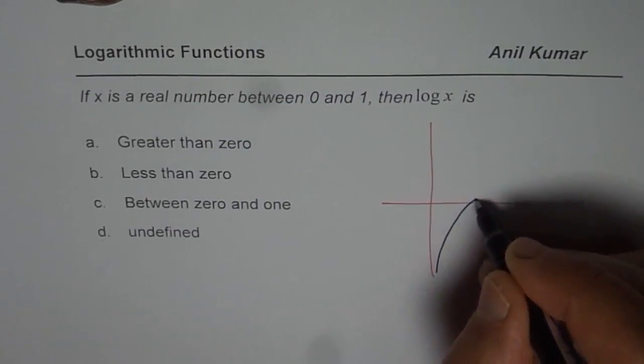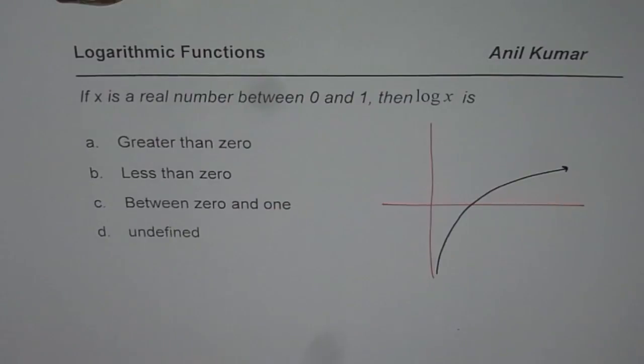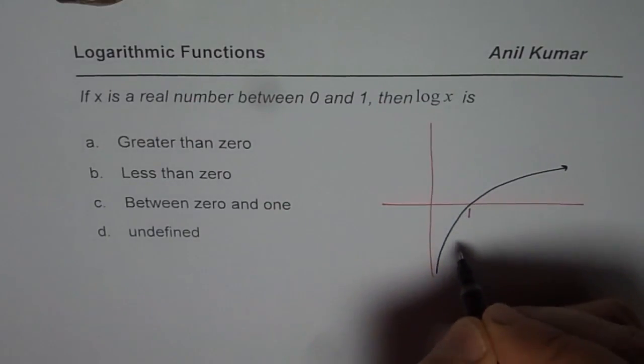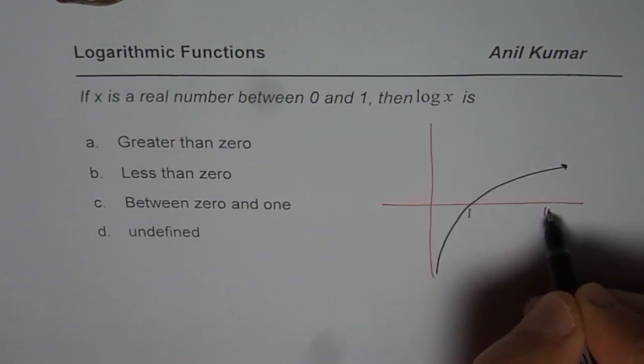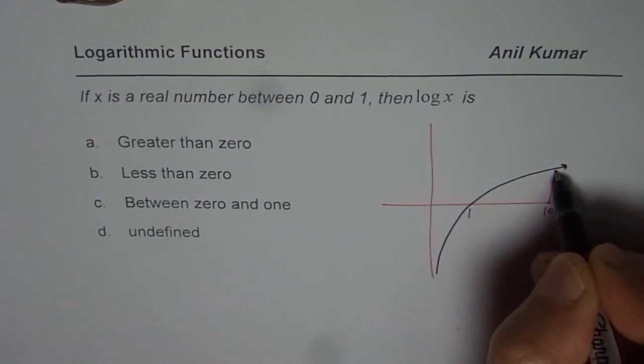will be a graph which is kind of like this, where this value is always 1 and at 10, let's say this is 10 for us, right? So let's say this is 10 for us,